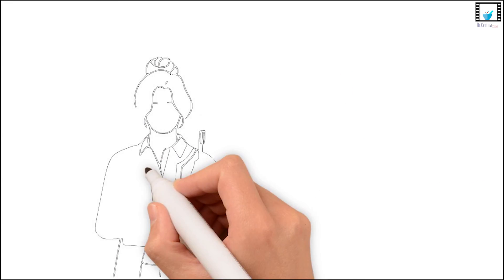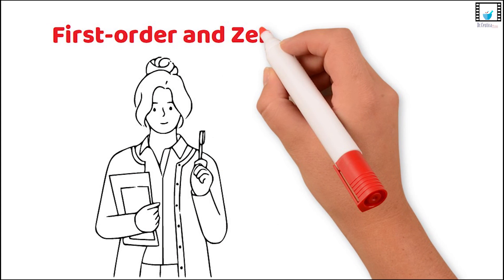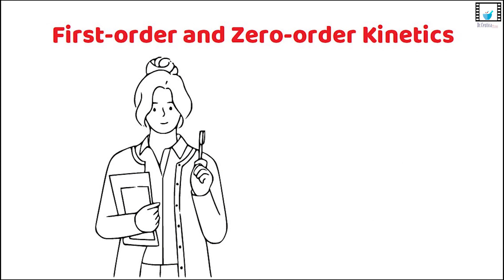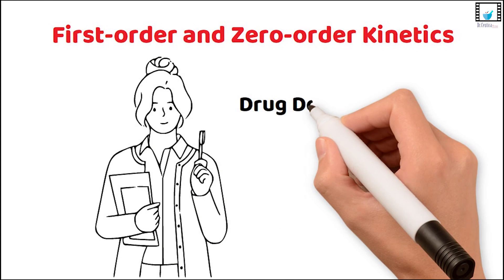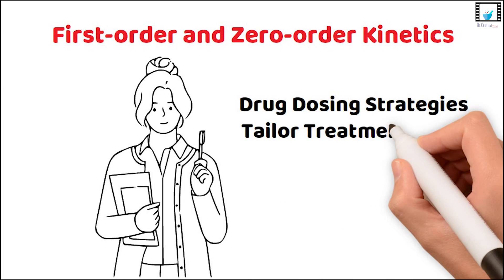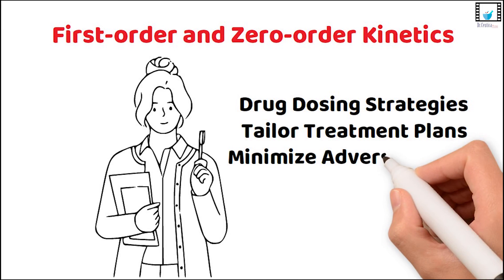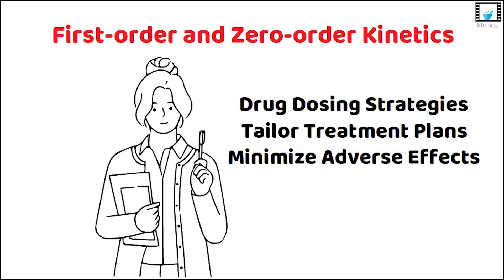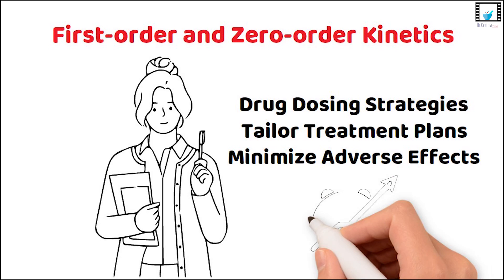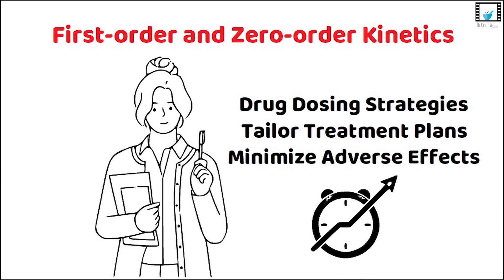By comprehending both first-order and zero-order kinetics, pharmacists can optimize drug dosing strategies, tailor treatment plans, minimize adverse effects, and enhance therapeutic outcomes for patients.